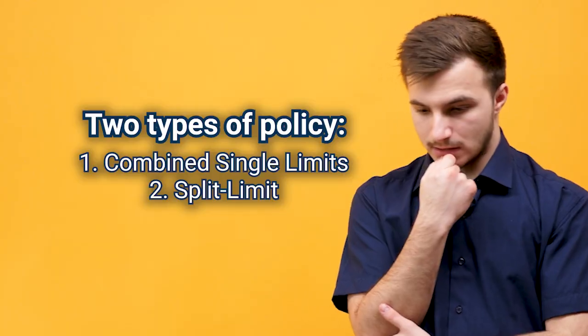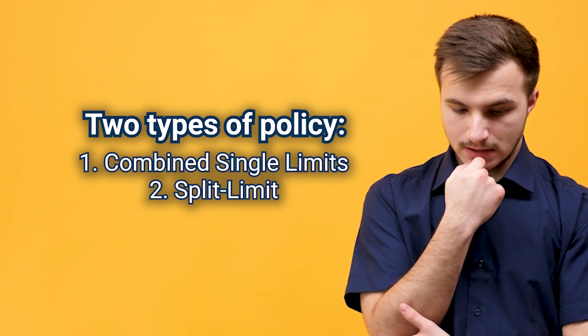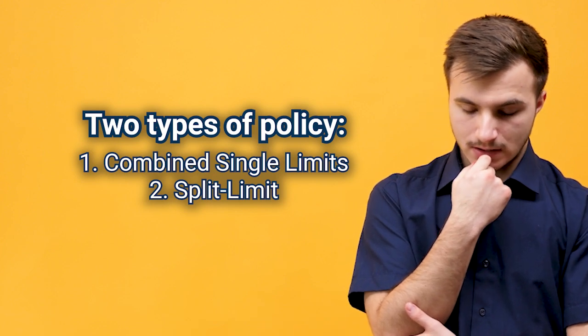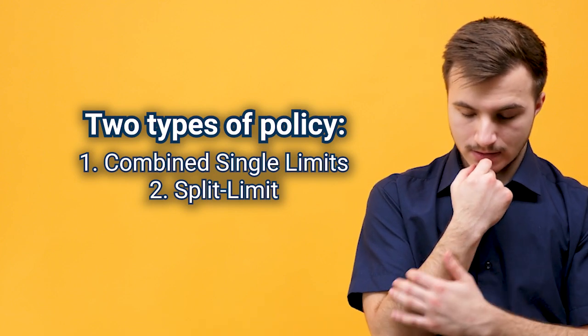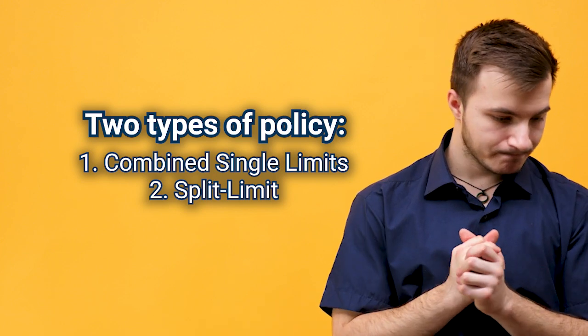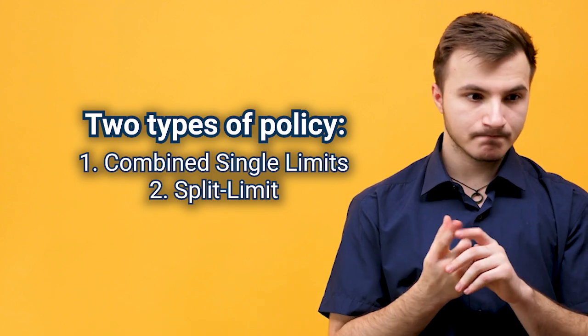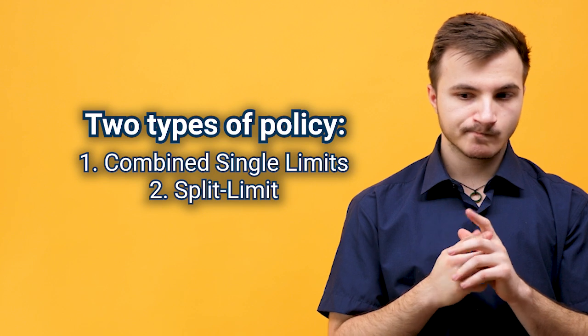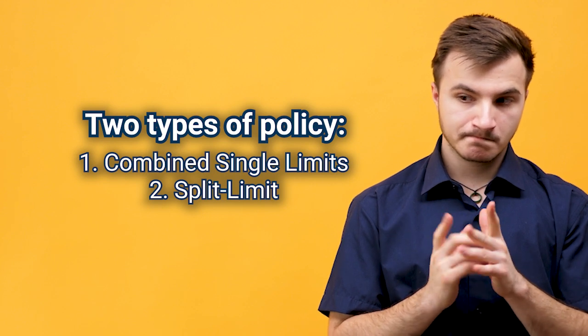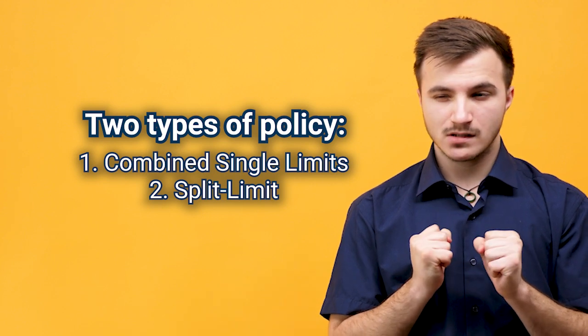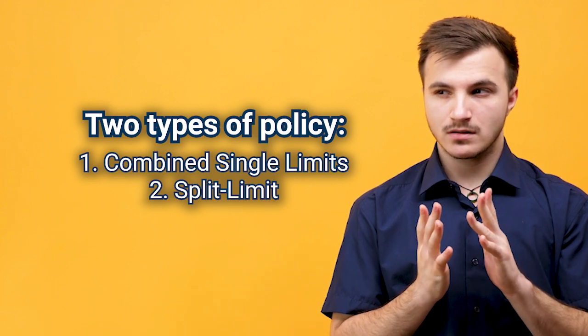There are two different types of policies that you can get as far as the liability limits are concerned. One of them is a CSL, or combined single limits, which is not very common. The more common one that you probably have is a split limit.